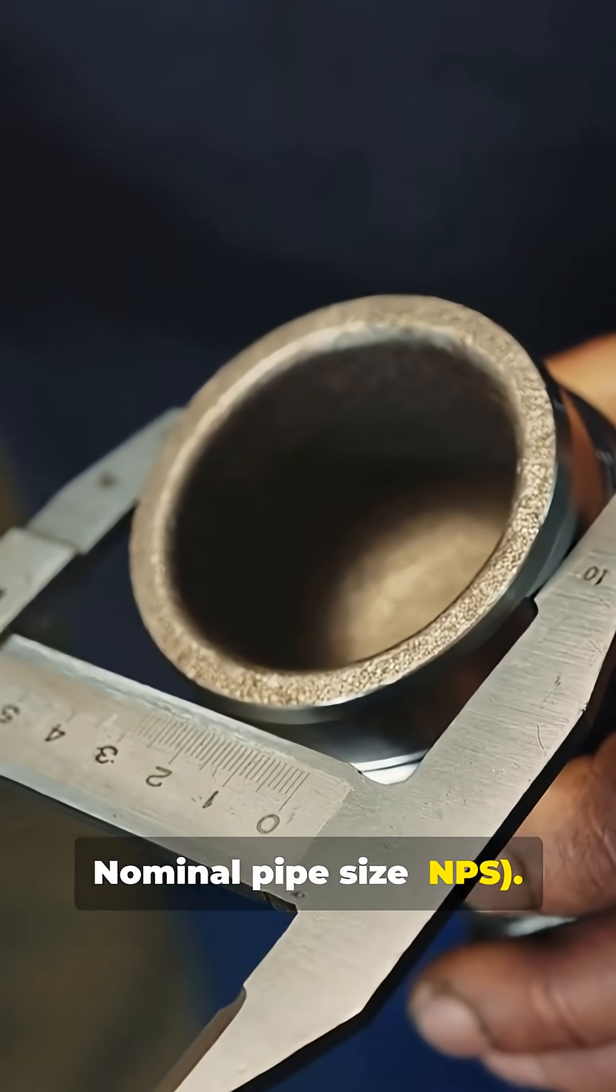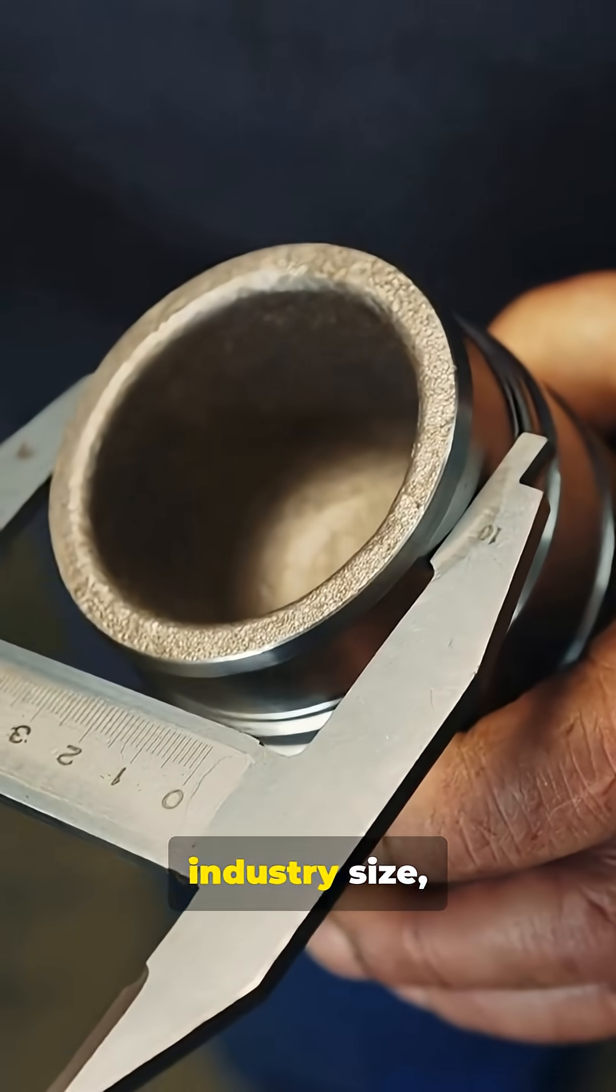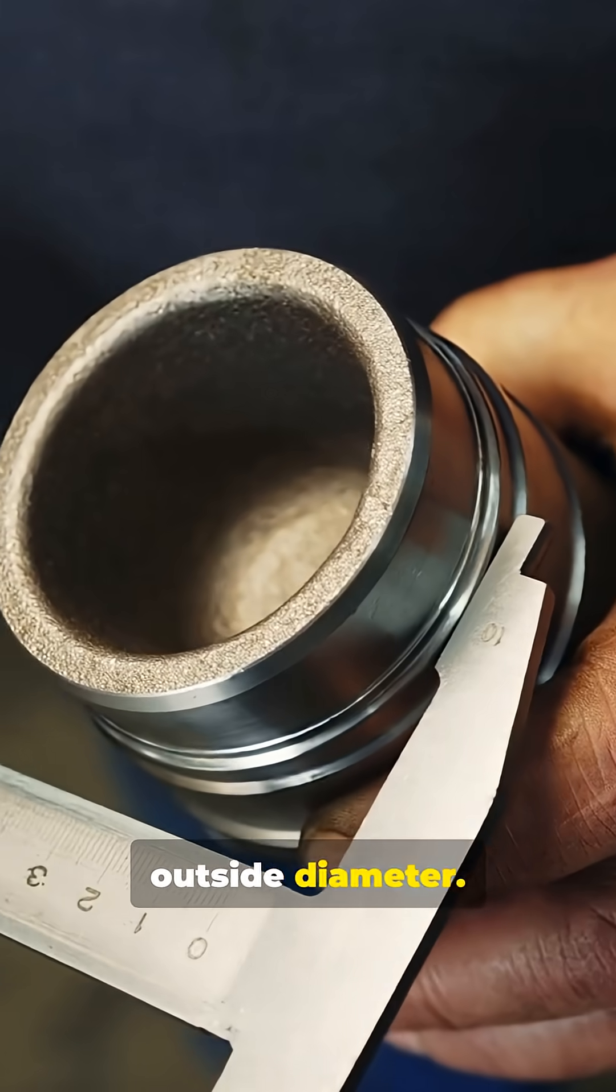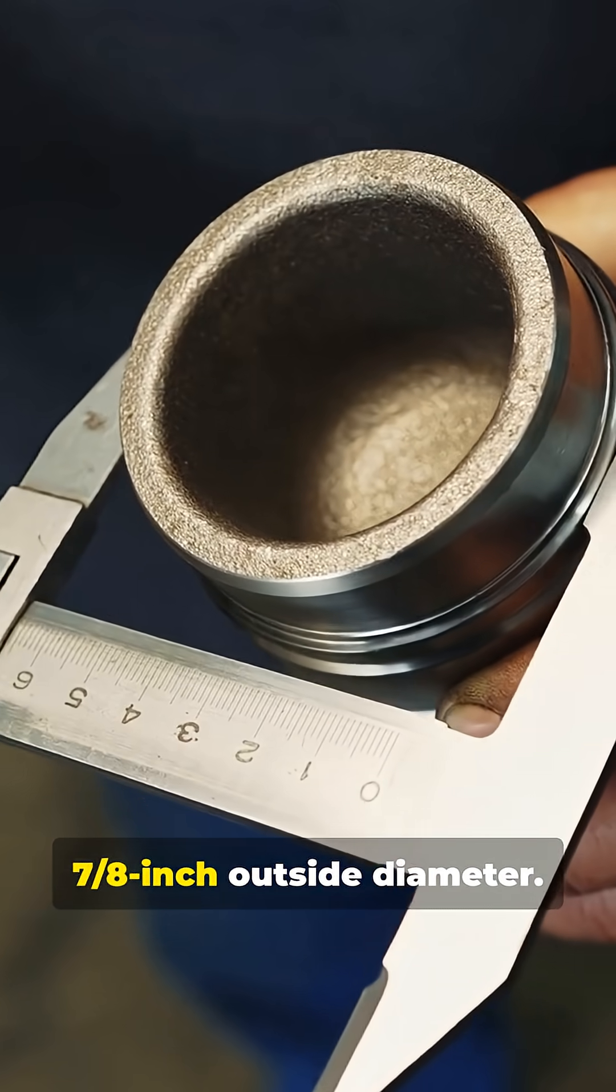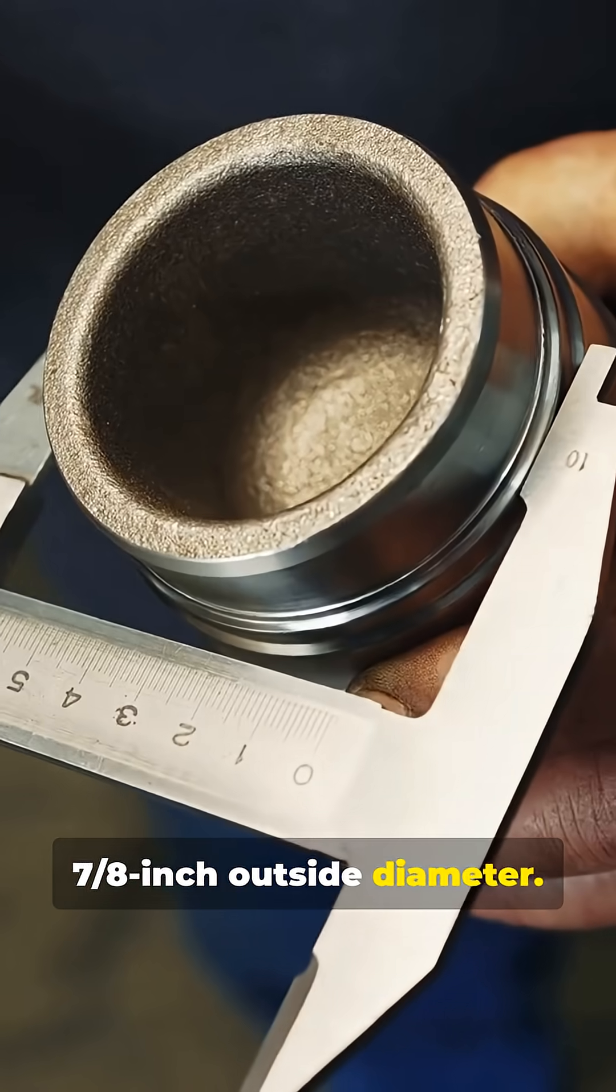Nominal pipe size, NPS. This is the industry size, not the actual outside diameter. For example, a 3/4-inch copper pipe measures about 7/8-inch outside diameter.